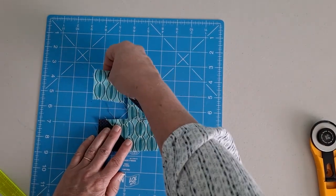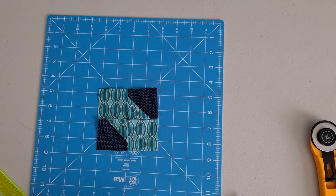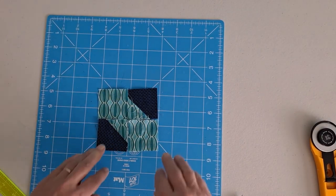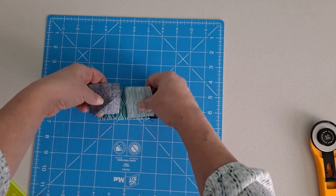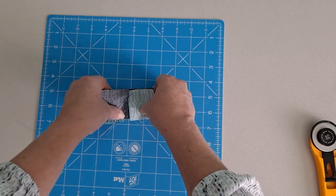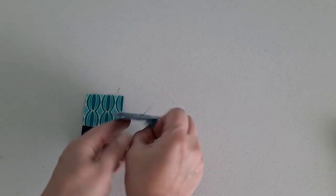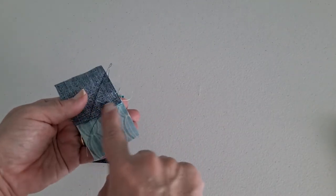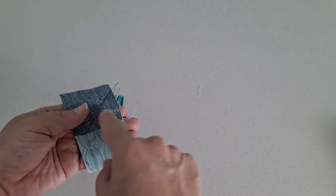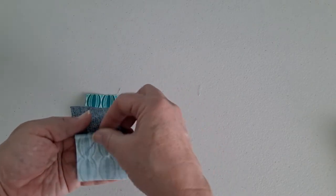And we're going to make a four patch so it looks like this. And we're going to flip them and sew those together. Once we get those sewn, I like to press toward the solid square just because there will be less bulk than if you tried to press the other way.